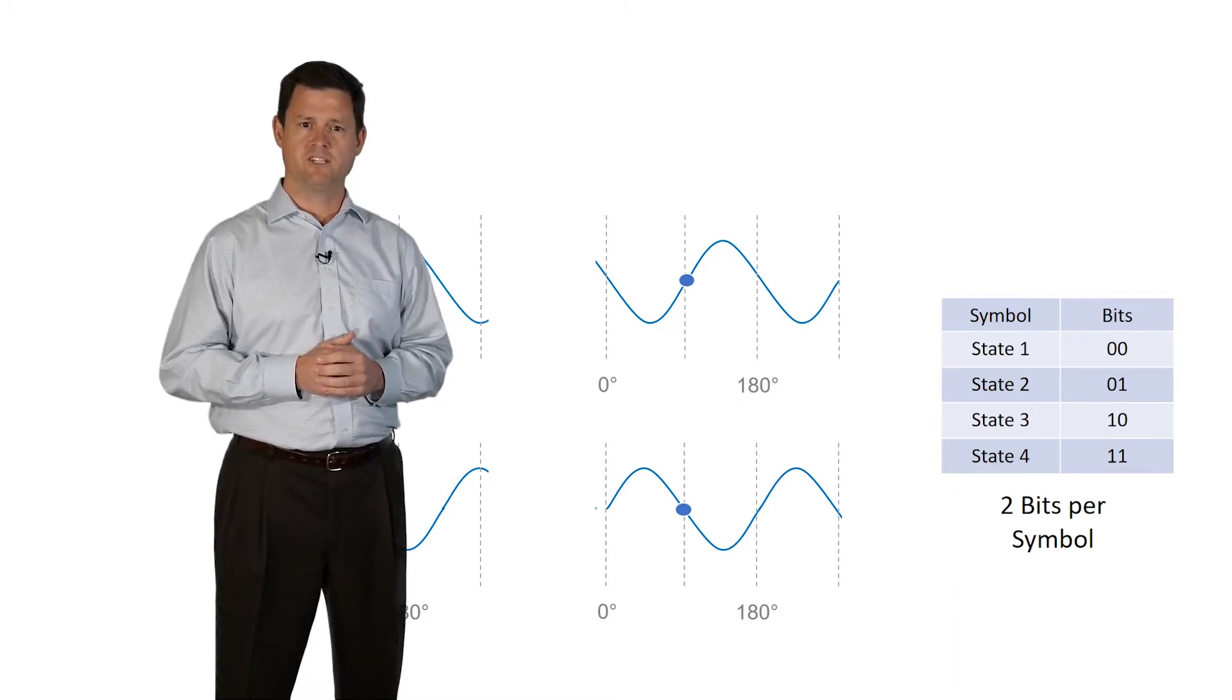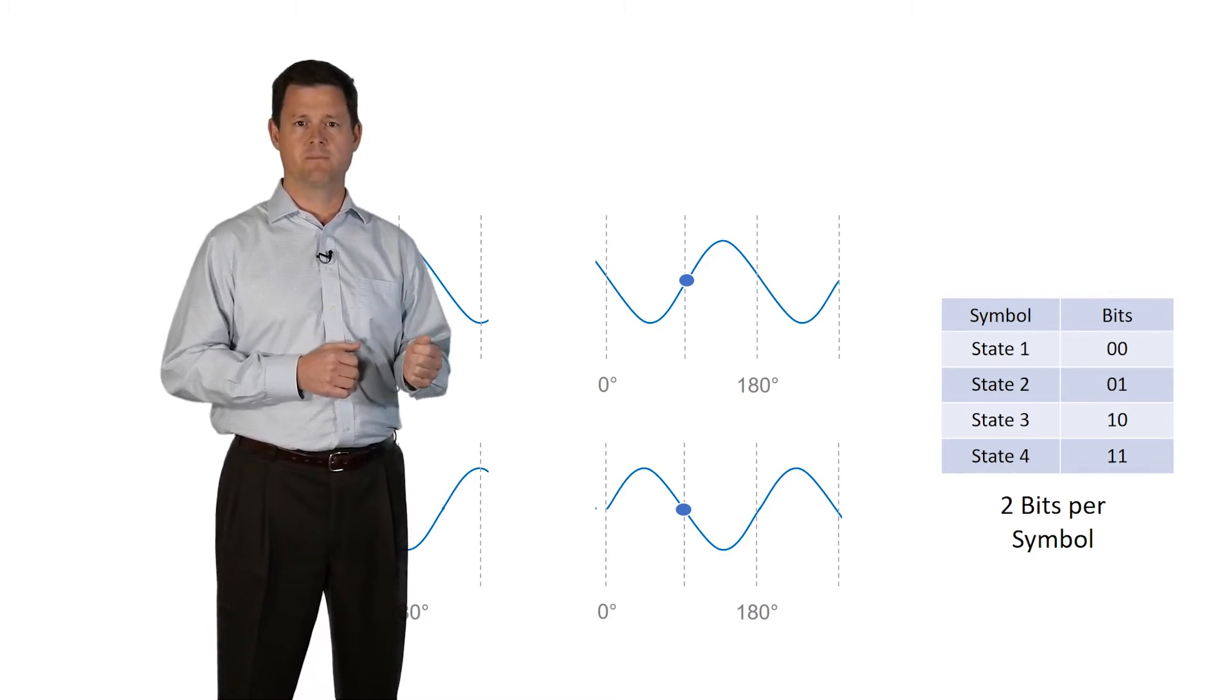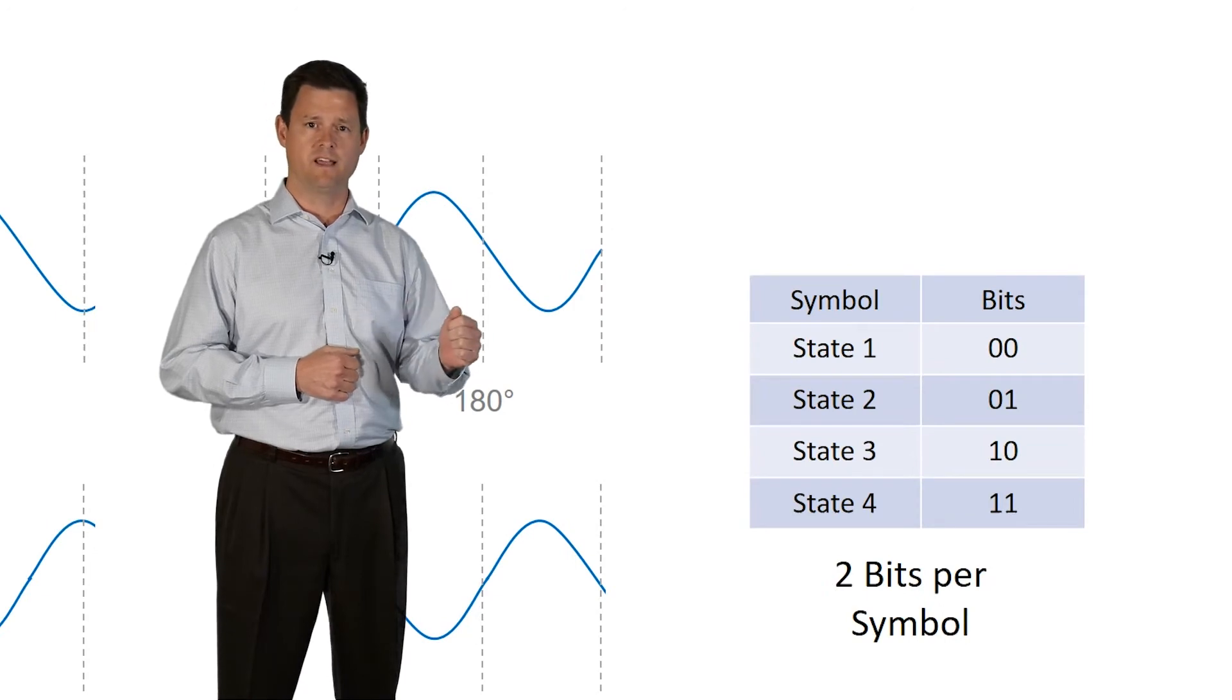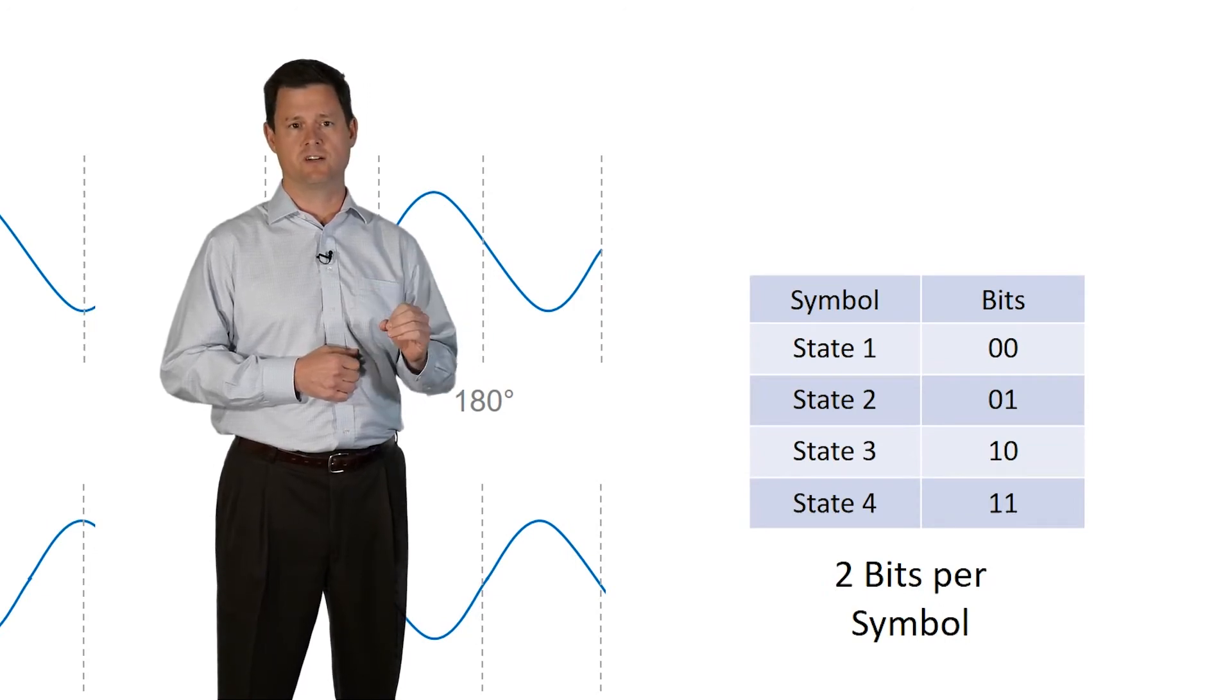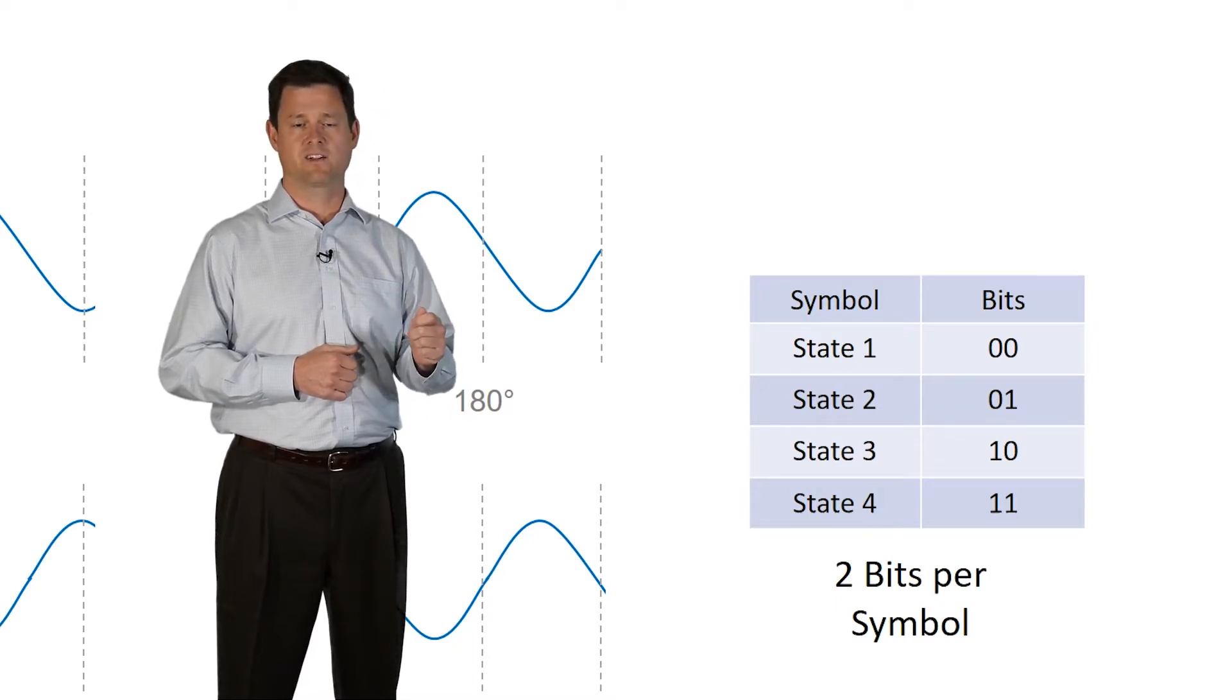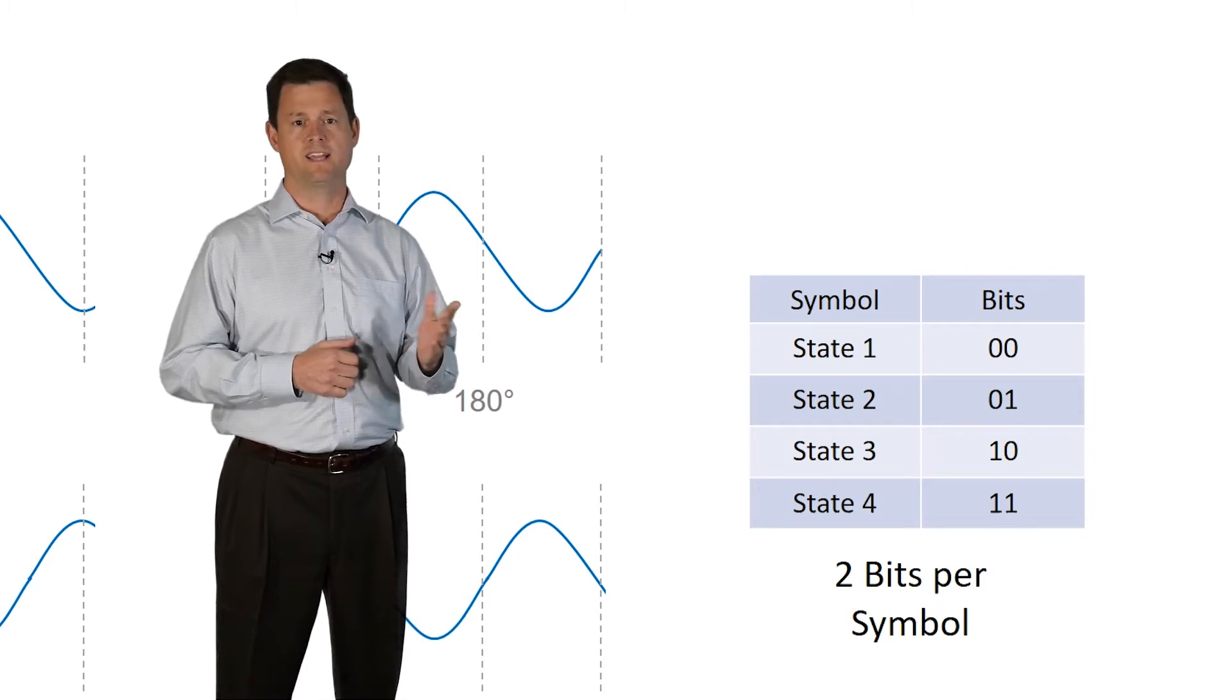Using this information, each of the four phase states can be interpreted as two bits of information. For example, if we detect an incoming signal as being in phase state one, that translates to a zero, zero. If the next measurement we take, we detect a signal at phase state two, that translates into a zero, one, and so on.